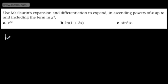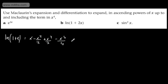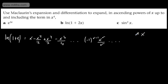Let's do the natural log of 1 plus x and expand that. We get x − x²/2 + x³/3 − x⁴/4 + ... and (−1)^(r−1)·xʳ/r. We realize that x is valid from −1 to +1. So instead of x, we put 2x — let's do the natural log of 1 plus 2x.